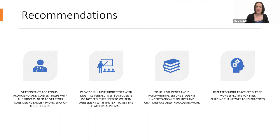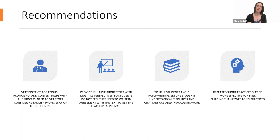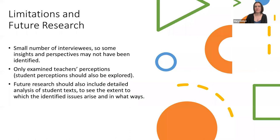Here are a few recommendations for teaching academic writing. First, vetting texts for English proficiency and content does help with acquiring the reading-to-academic-writing skill, but texts need to be vetted considering the students' English proficiency. Second, we suggest providing multiple short texts with multiple perspectives on the topic, so students do not feel forced to write in a way that agrees with the teacher, and to encourage critical thinking. Third, to help students avoid patch writing, it's important to make sure they understand why sources and citations are used in academic work. Finally, repeated short practices may be more effective for skill building than fewer long practices.